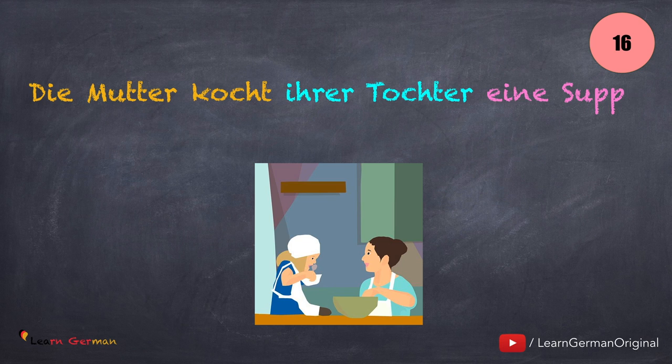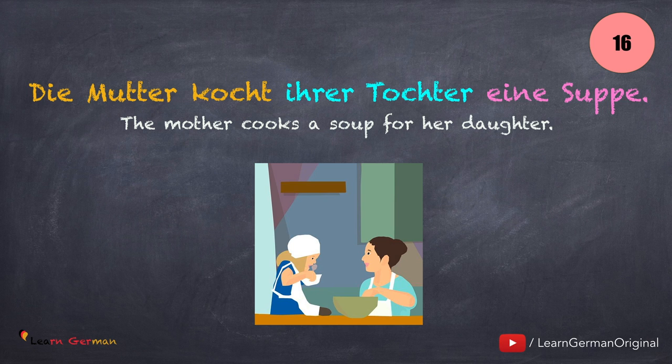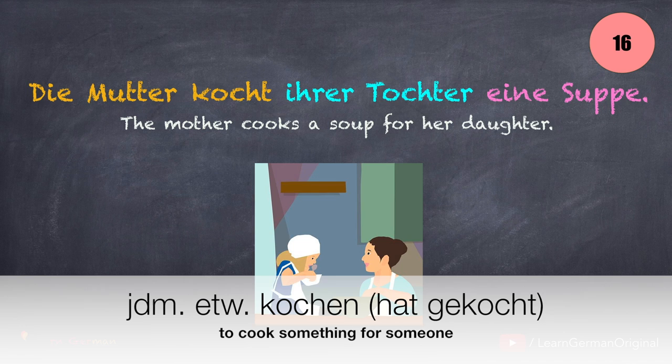The next one is also a very common verb: Die Mutter kocht ihrer Tochter eine Suppe. In this case also, you can make the sentence without the Dativobjekt. Jemandem etwas kochen.